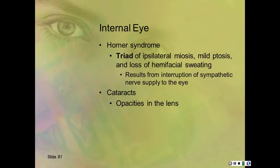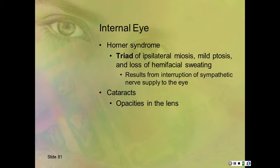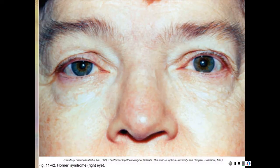For the internal eye: Horner's syndrome is a triad of miosis, mild ptosis, and loss of hemifacial sweating. It results from an interruption of the sympathetic nerve supply to the eye. You can also have cataracts and opacities in the lens. Here's Horner's syndrome in the right eye with some opacities.